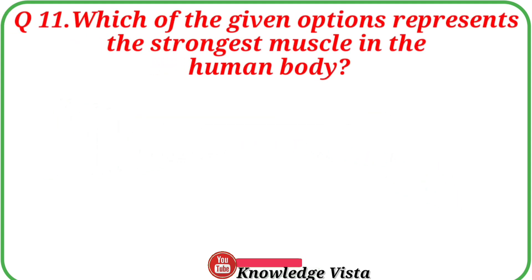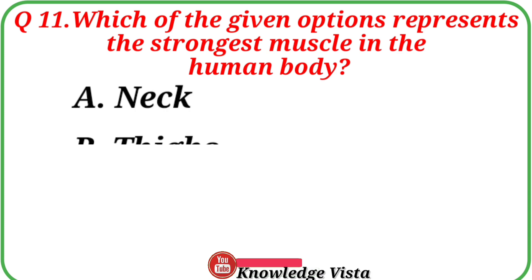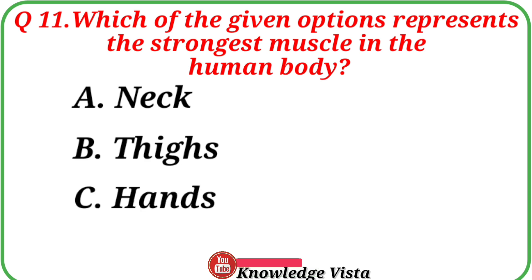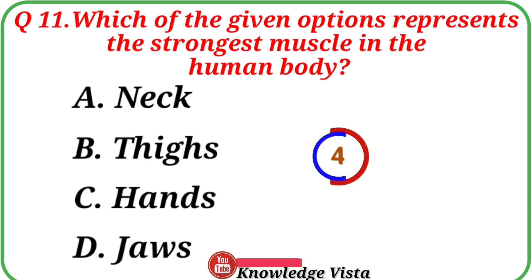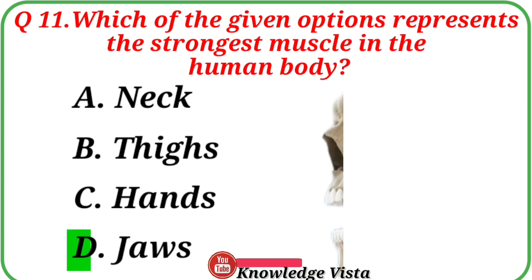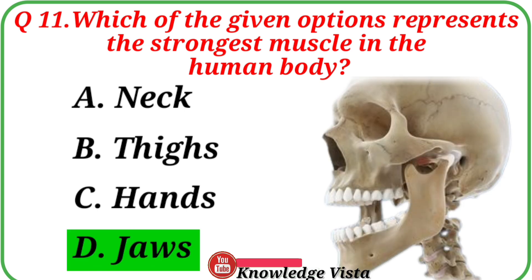Question number 11: Which of the given options represents the strongest muscle in the human body? Your options are: A. Neck, B. Thighs, C. Hands, D. Jaws. Correct answer is option D, Jaws. Jaws are the strongest muscle in the human body.